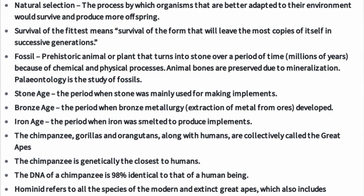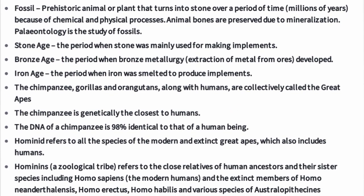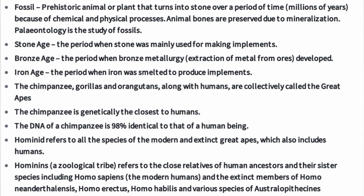Stone Age: the period when stone was mainly used for making implements. Bronze Age: the period when bronze metallurgy — extraction of metal from ores — developed. Iron Age: the period when iron was smelted to produce implements.